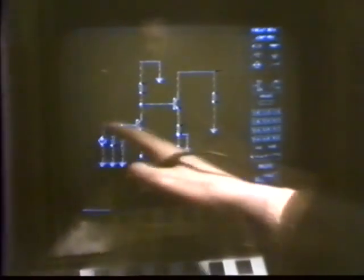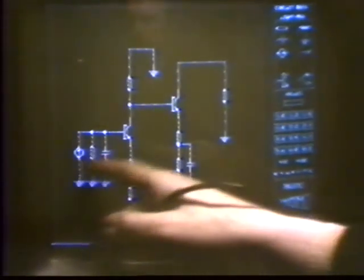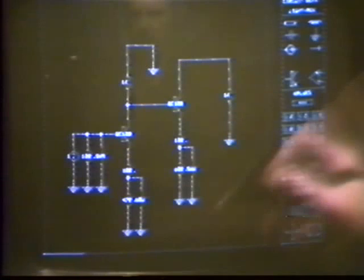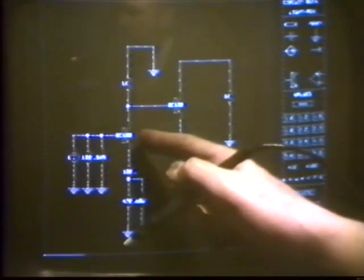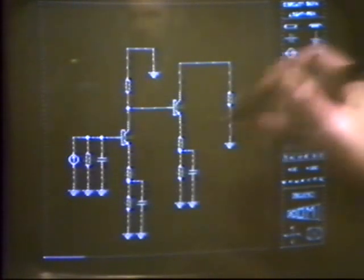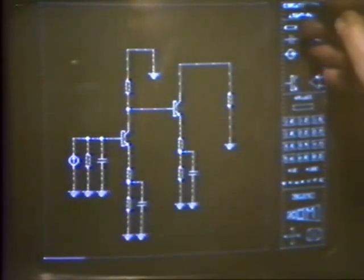We've seen how easy it is for the designer to draw his circuit diagram and to assign values to the different circuit components. What I'd like to do now is go back to the MINI system to look at a new circuit, a two-stage amplifier with a source represented by a current generator, a resistance and capacitance. We've assigned values both to the components, and we've assigned type numbers to the transistors.